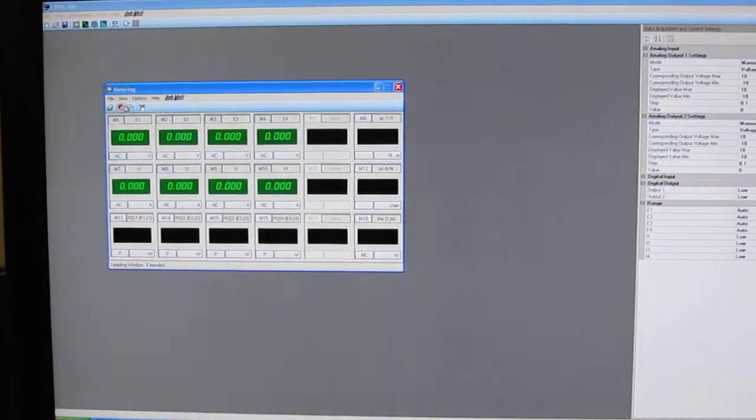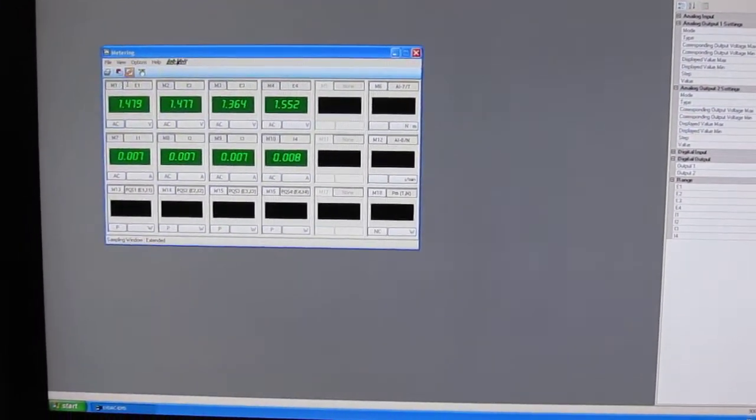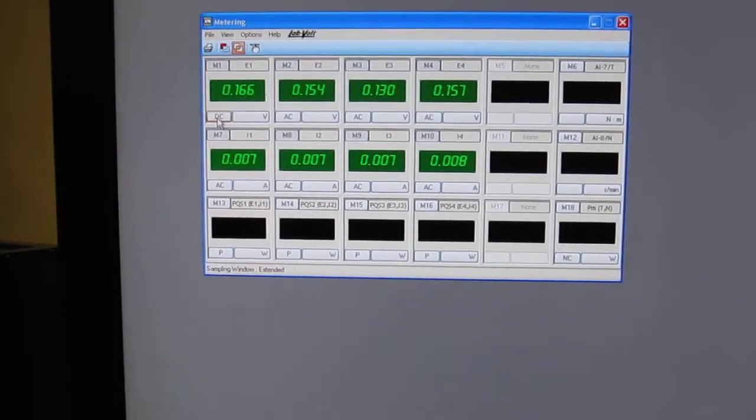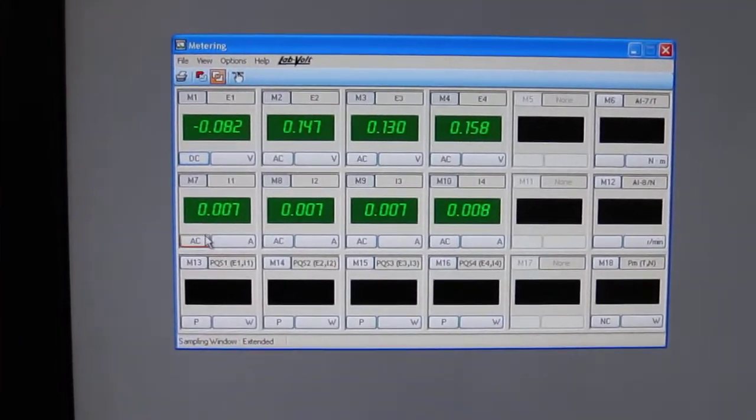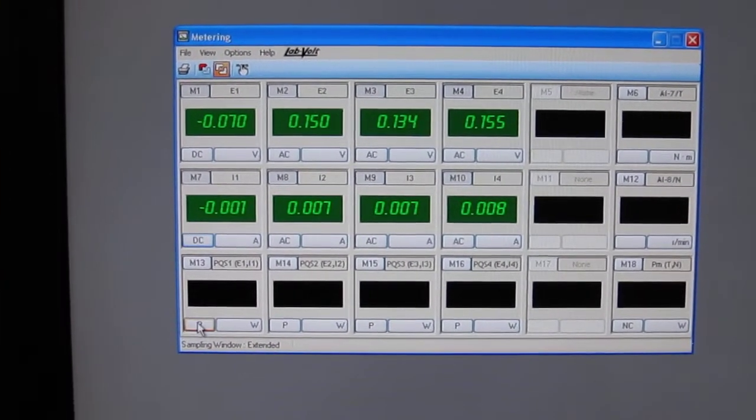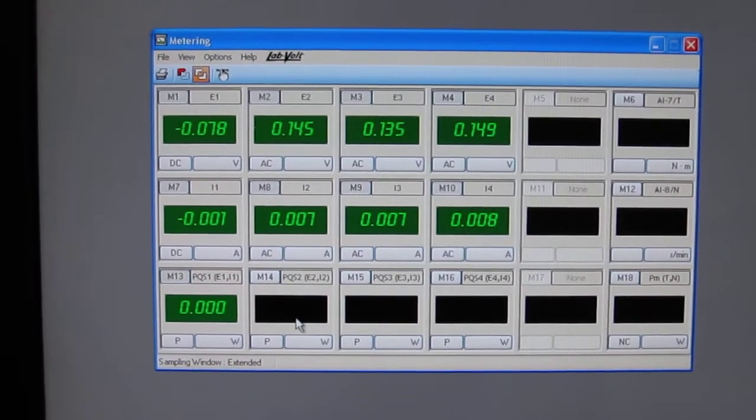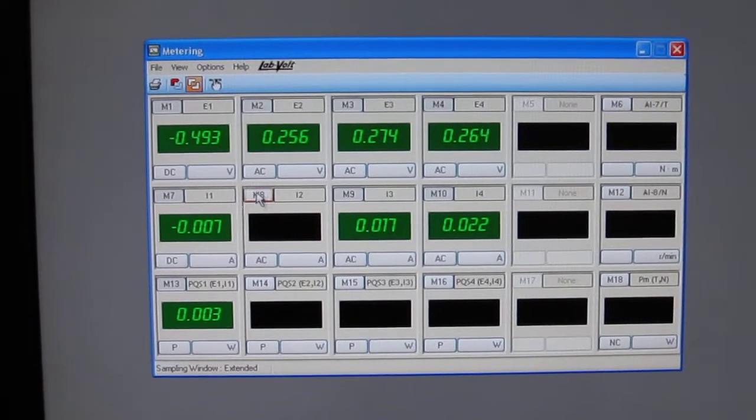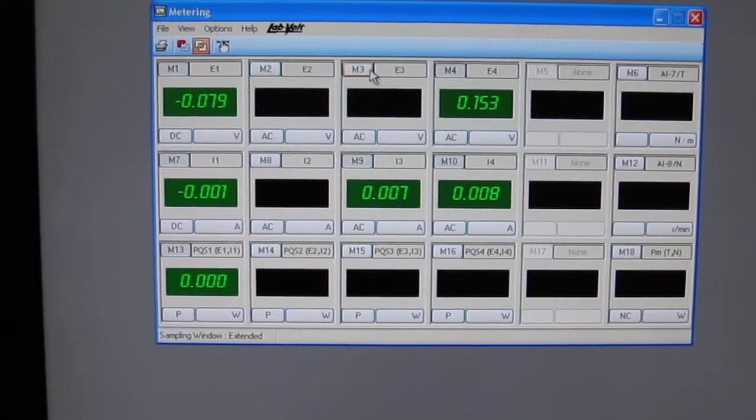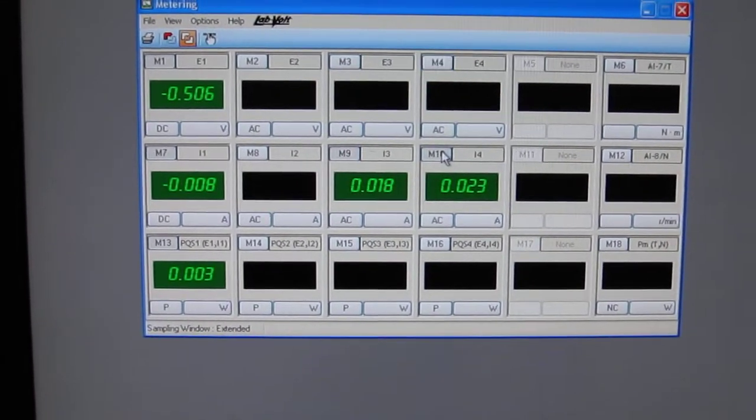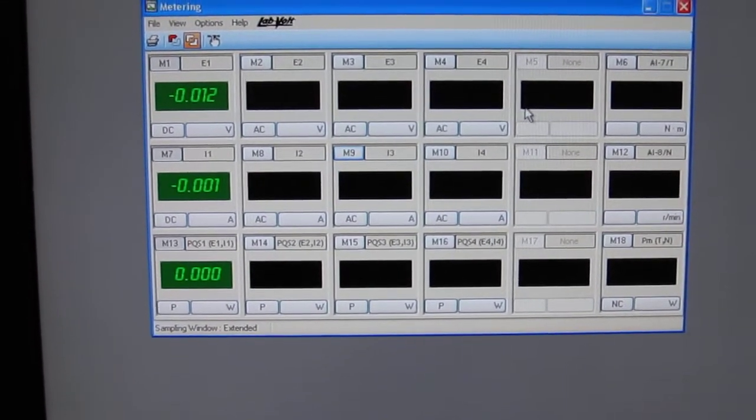So in this one, in my meters, I want to monitor voltage E1 in DC, I1 in DC, and my power in watts. No reactive power because it's DC. I will just turn the other meters off because they are just cluttering my visual field here.